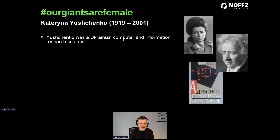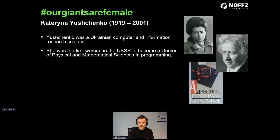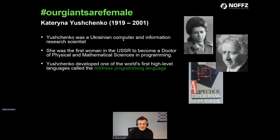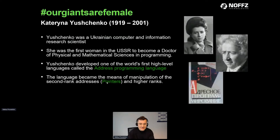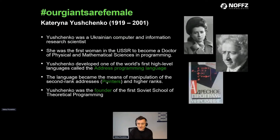We start with our giants — today I want to tell you about Katrina Yushinka. She was a Ukrainian computer information research scientist — the first woman in the USSR to become Doctor of Physical and Mathematical Sciences in programming. She developed one of the world's first high-level languages called Address Programming Language. This is the cover of her book, which is really important.